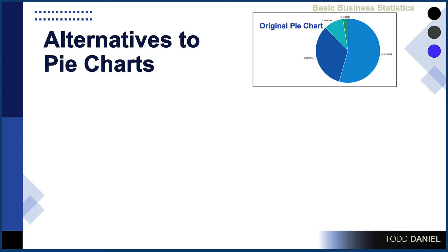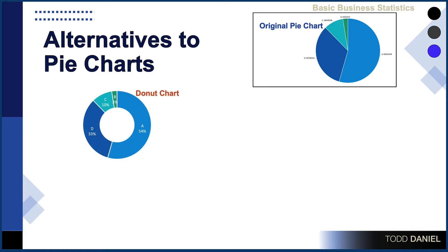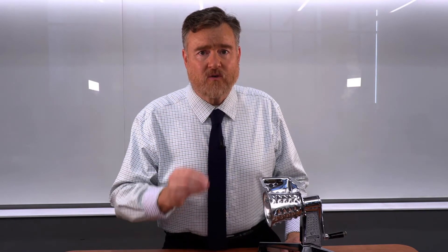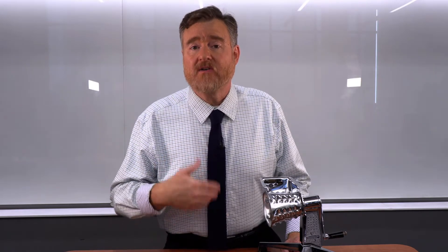Of course, it would not be fair to tell you not to use pie charts without giving you some alternatives. In the upper right, you can see the original pie chart. This is a donut chart. You might immediately say, 'Well, isn't that a pie chart?' Yes, in a way it is. However, by adding that white circle in the middle of the pie, you create more linearity of the slices, now making them slightly easier to interpret. Therefore, if you are absolutely stuck with using a pie chart, at the very least make it a donut chart.